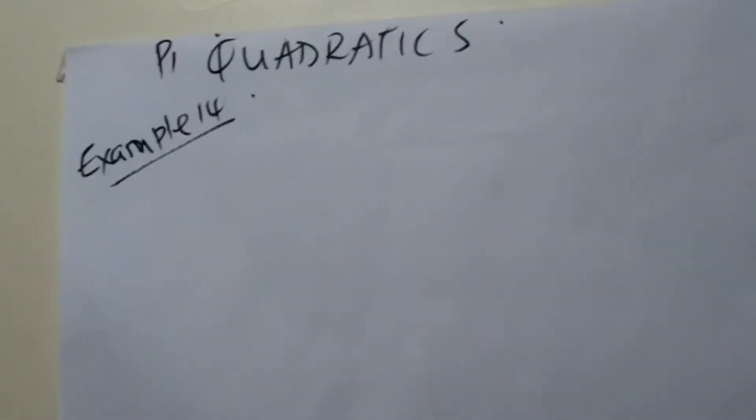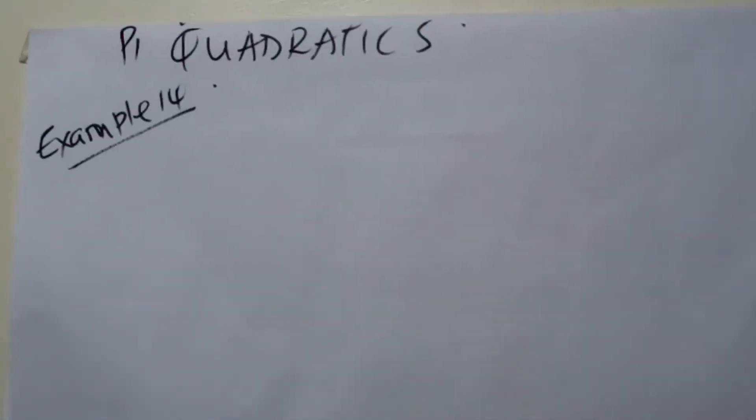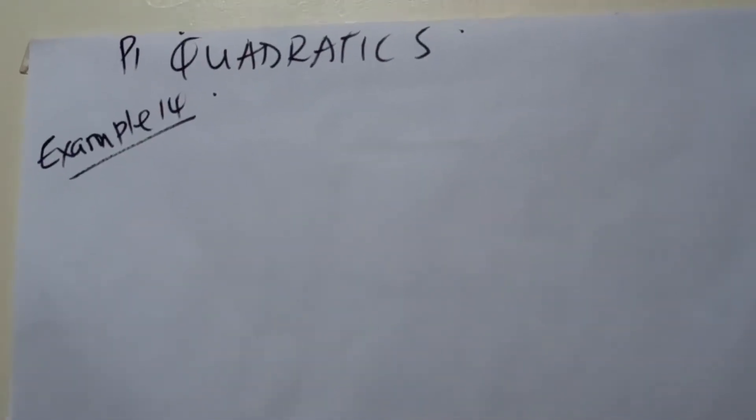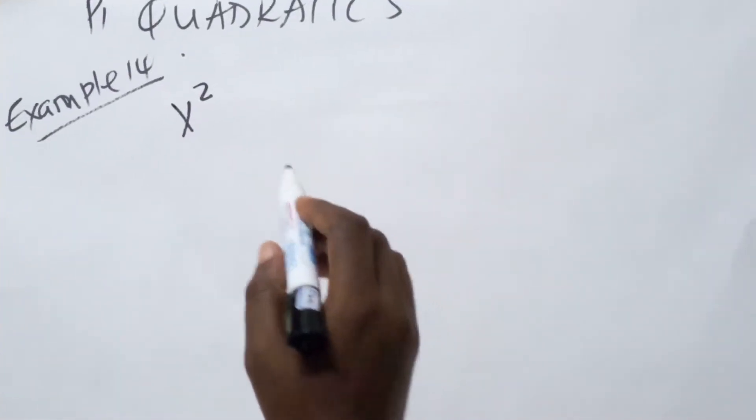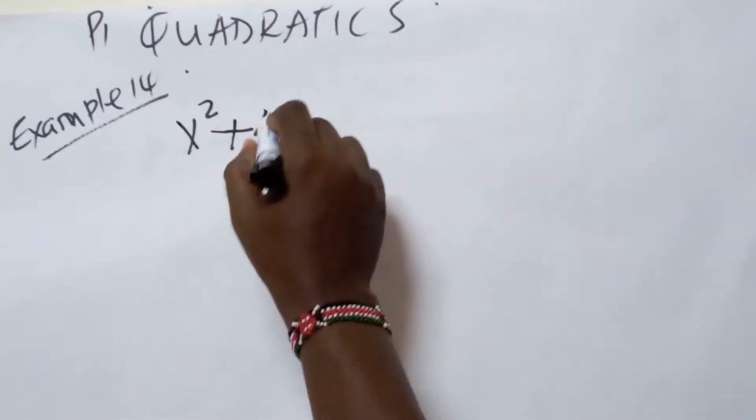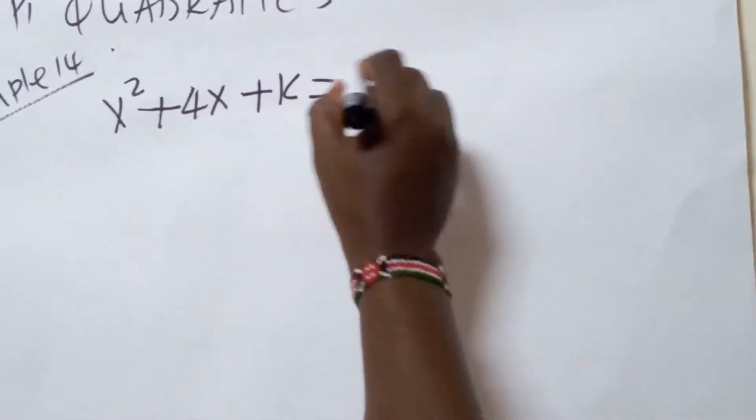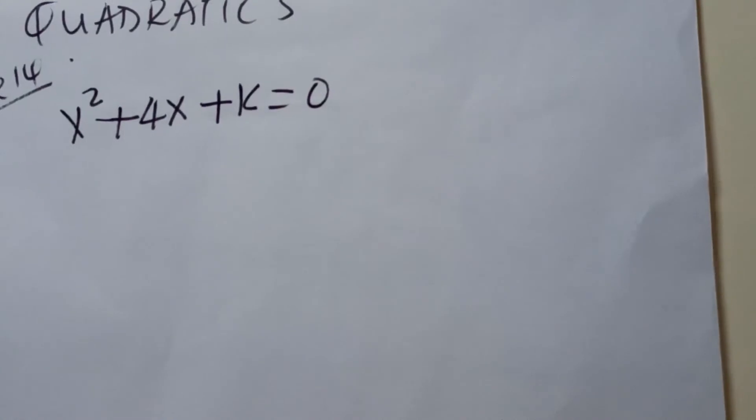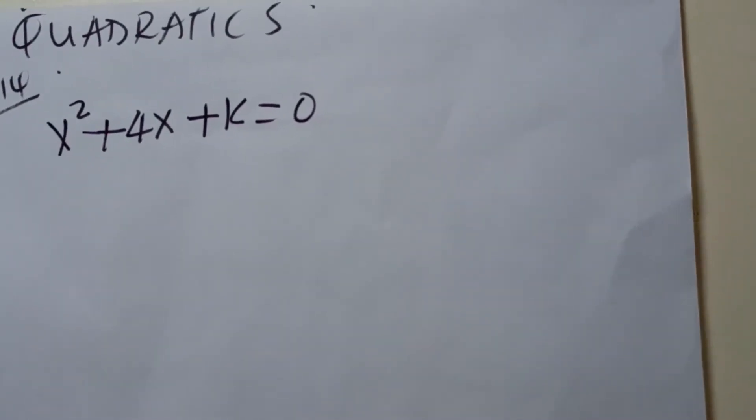In example 14, and the last one in this topic, we are expected to find the range of values of k for which x squared plus 4x plus k equals 0 has two distinct real solutions.